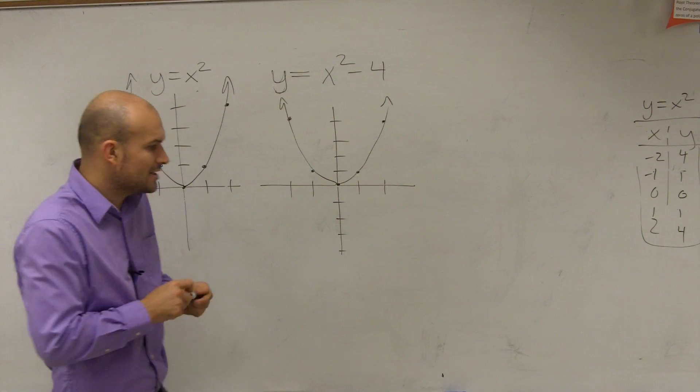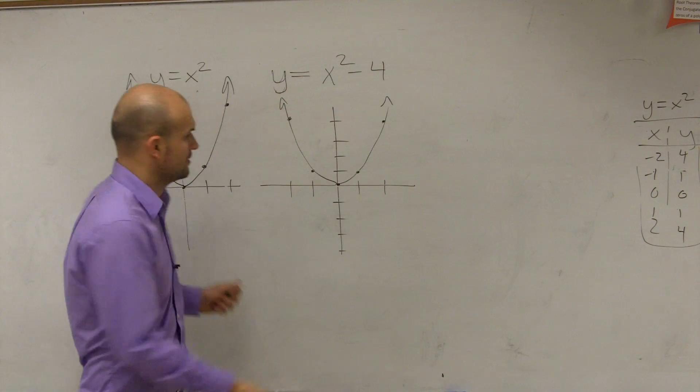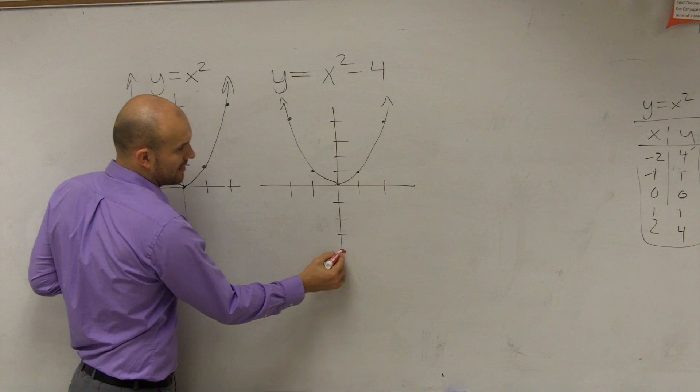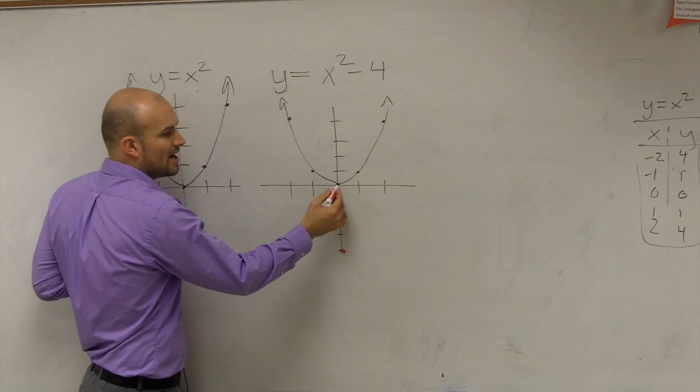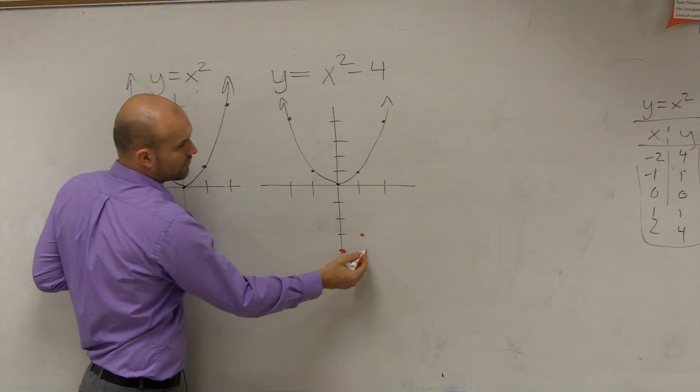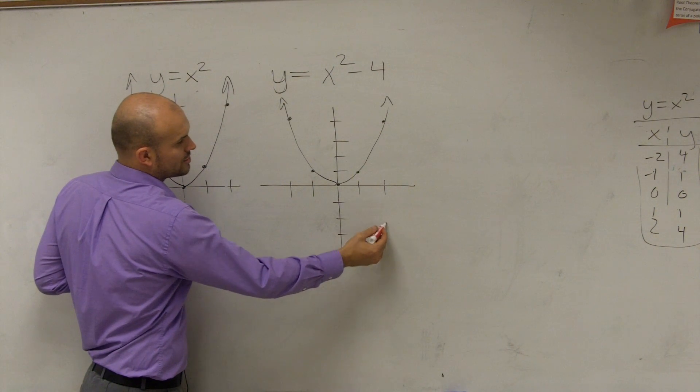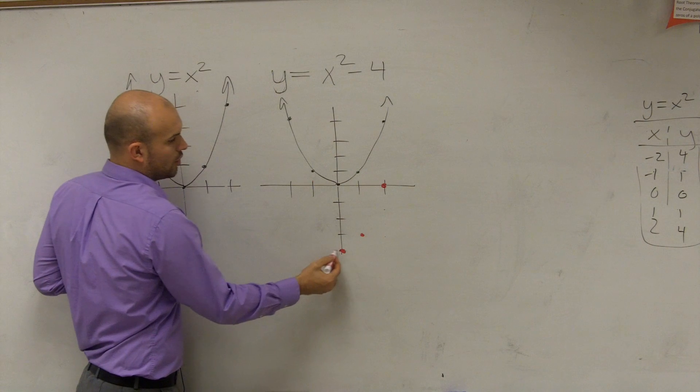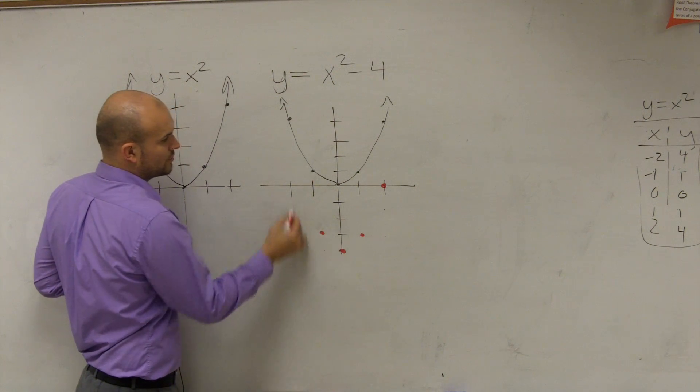So how do you reconstruct it 4 units down? Well, my new vertex is going to be down here, and I still follow the pattern. Over 1, up 1. Over 1, up 1. Over 2, up 4. 1, 2, 3, 4. Over 1, up 1. Over 2, up 4.